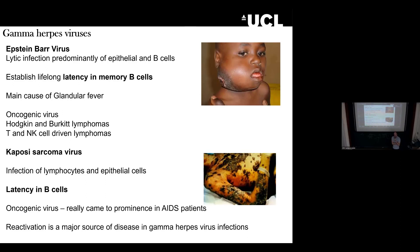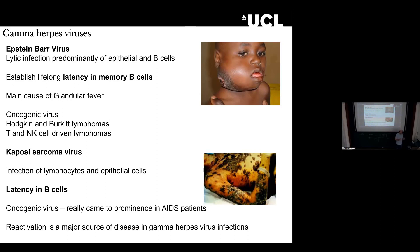Latency is very cell-type specific. CMV will lytically infect most differentiated cells — endothelial, epithelial, fibroblast, neuronal, smooth muscle cells — it will go lytic in those cells. Latency is a very restricted phenotype in a specific population of cells, and it differs between families. HSV and the alphas go latent in neuronal cells; CMV in CD34 cells; the gammas tend to be B cells. All herpes viruses infect epithelial cells — that's how they get in through mucosal membranes — and then they traffic to their specific latency cells.